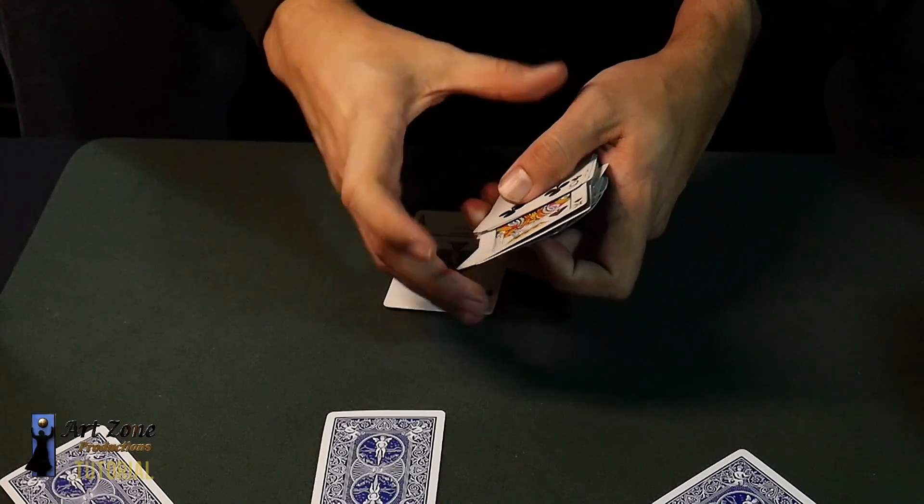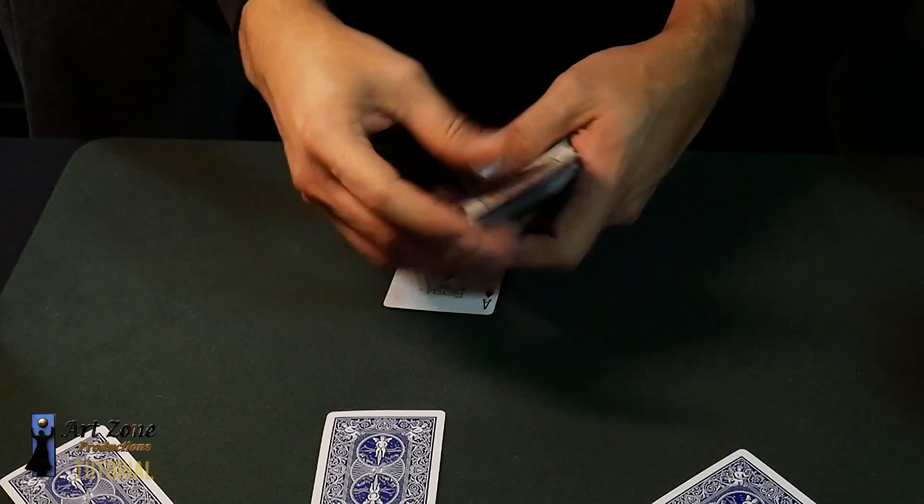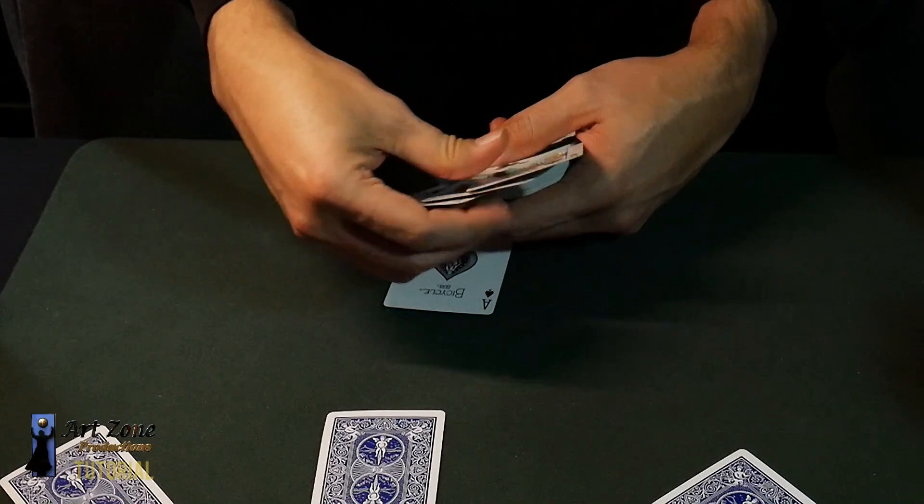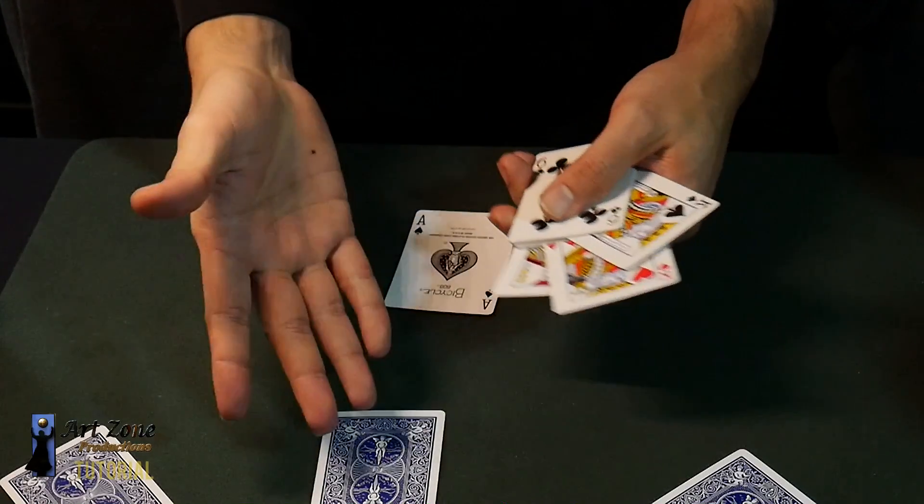That's why it's better to do it afterwards. So you square the deck well because you're going to make the pinky break above the three packets, which you don't have yet.